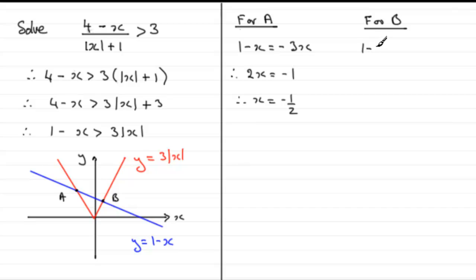And if we add x to both sides, we've got therefore 1 equals 4x. And divide both sides by 4, you end up with x equaling a quarter.